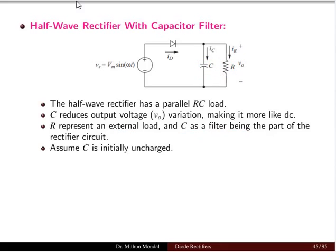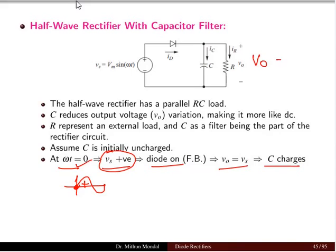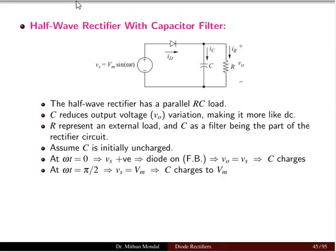Let us assume the capacitor to be initially uncharged. At ωt = 0, the voltage is positive. For the first half of the AC cycle, the diode is forward biased and the output voltage equals the source voltage, so the capacitor will start charging. This output voltage equals the source voltage and the capacitor charges as it is connected in parallel with the resistor.